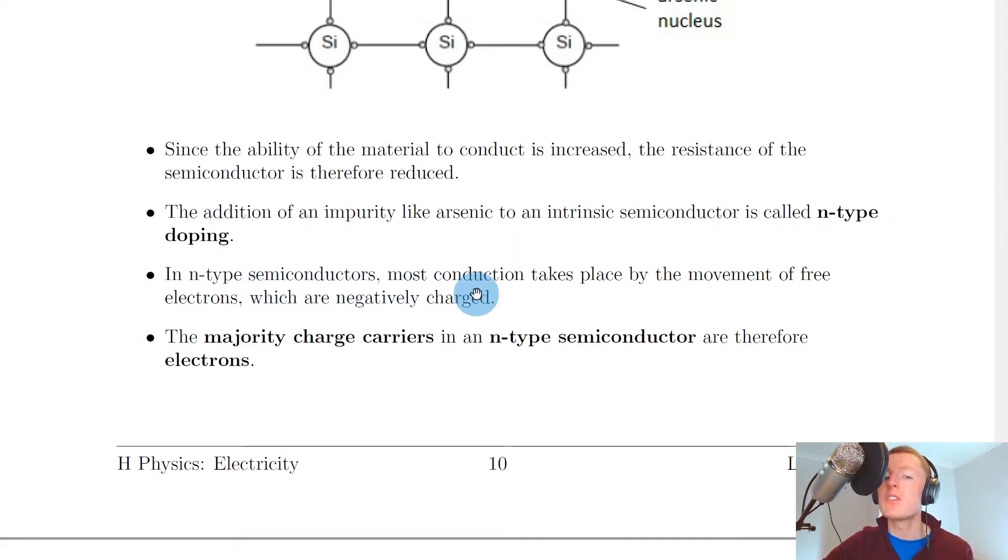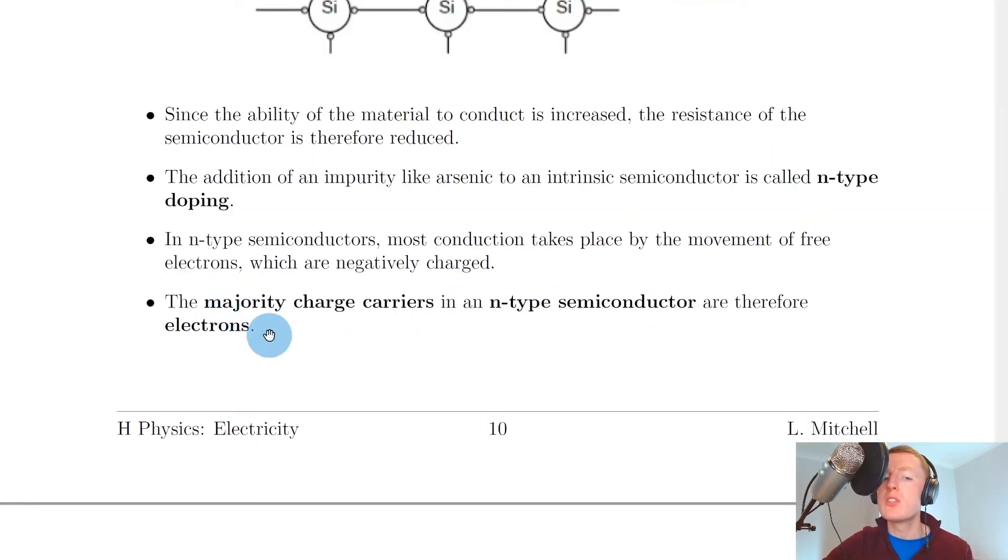In n-type semiconductors, most conduction takes place by the movement of free electrons which are negatively charged. We therefore say the majority charge carriers in an n-type semiconductor are electrons. Because we've got an increased number of electrons that are free to move about and conduct for n-type doping, the majority charge carriers are electrons.